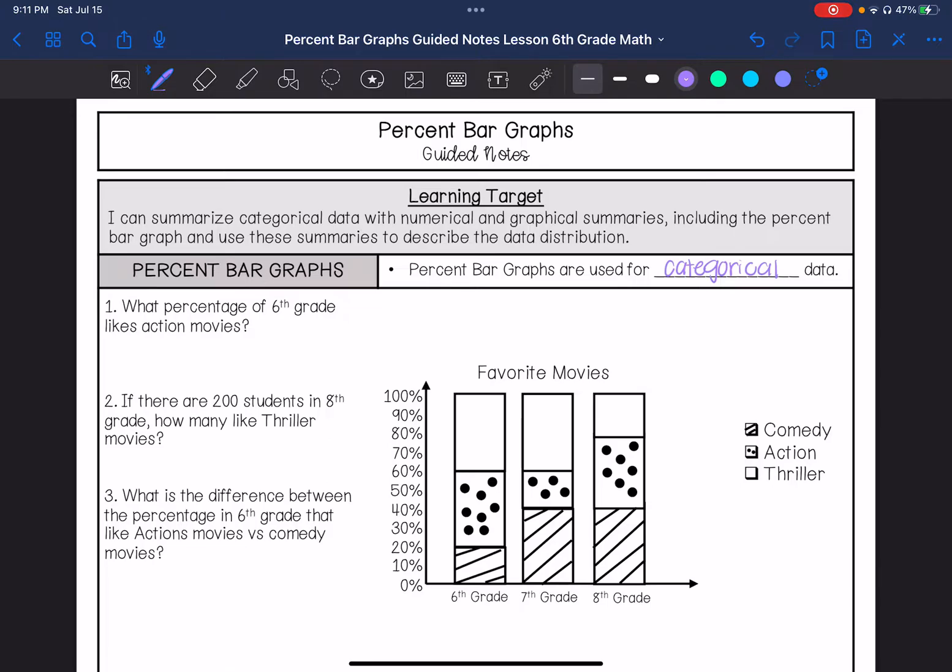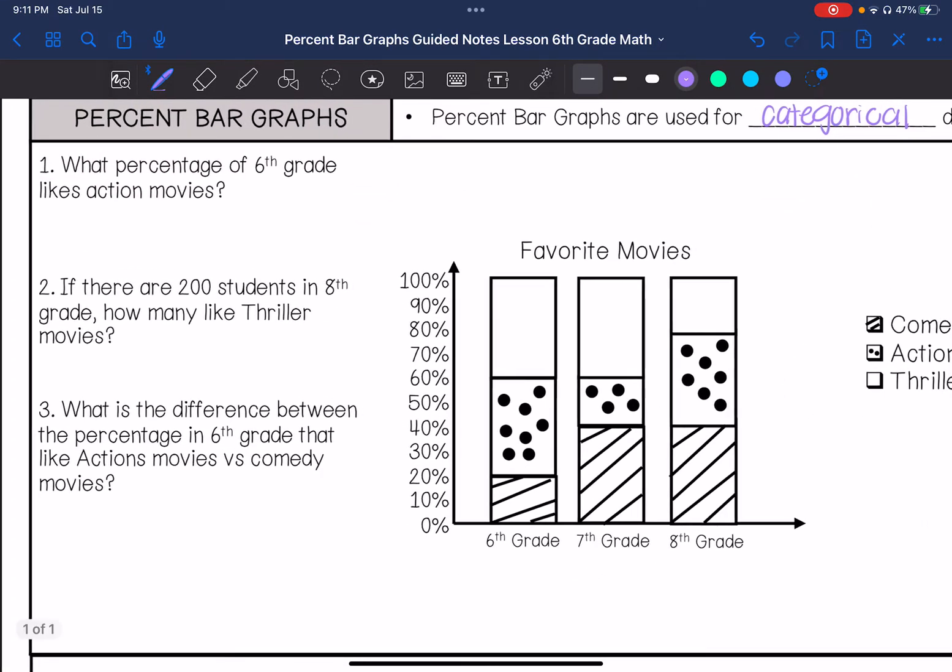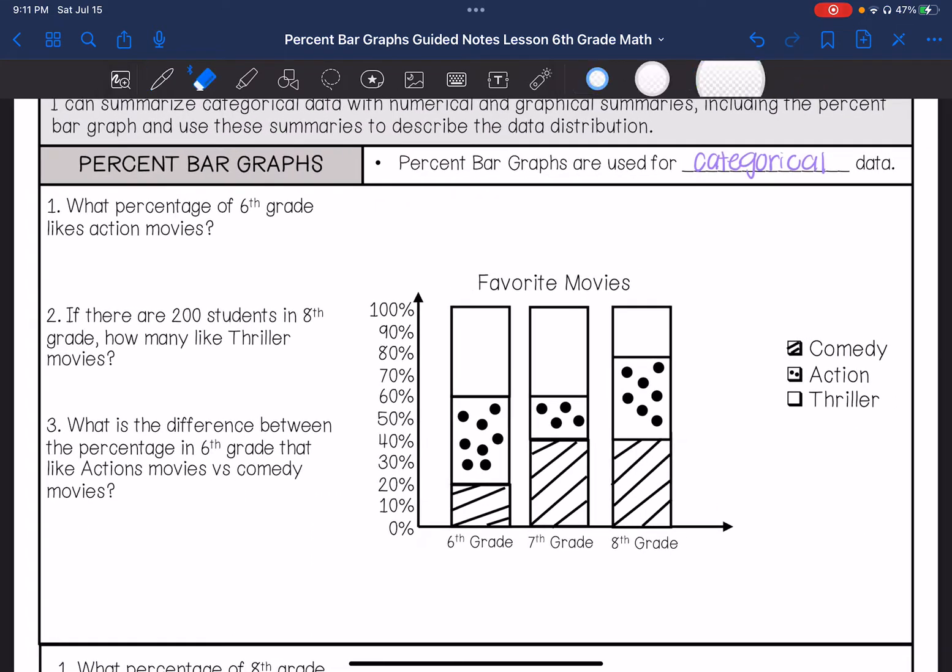I'm going to look at my graph and answer these questions. What percentage of sixth grade likes action movies? So if I go over here, sixth grade action movies is from 20% to 60%, so the difference between that is 40%.